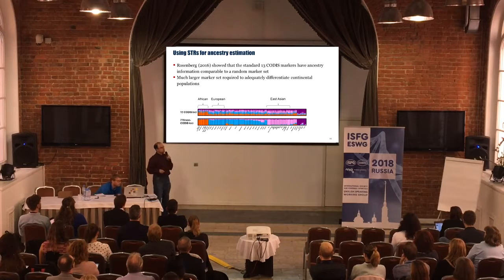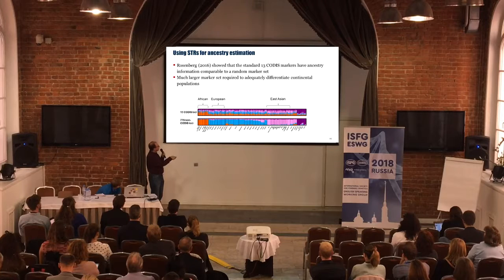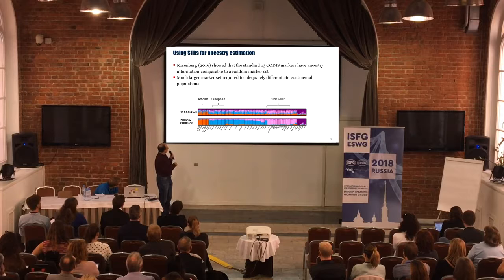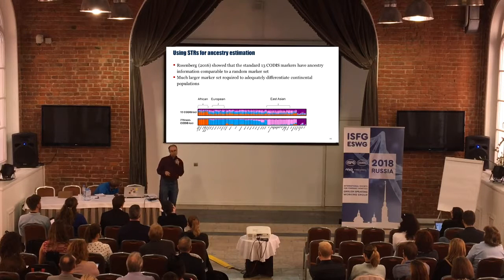So this is a structure plot — we saw some structure plots yesterday. All you can see is that the 13 core markers give a muddled picture. Over here are the European populations, we've got some African populations, some Asian populations, some Native American populations. And you can see that we're not getting very much differentiation. You need around 779 STRs to be able to get better differentiation between these populations.